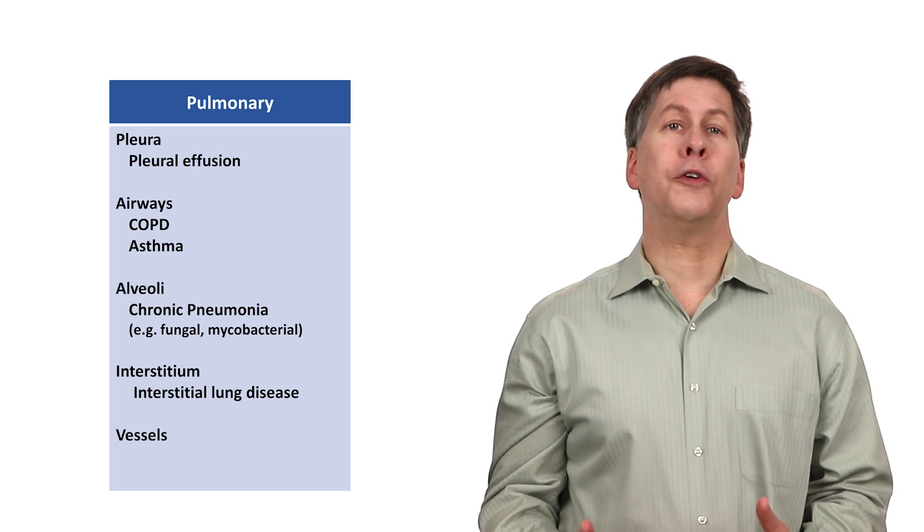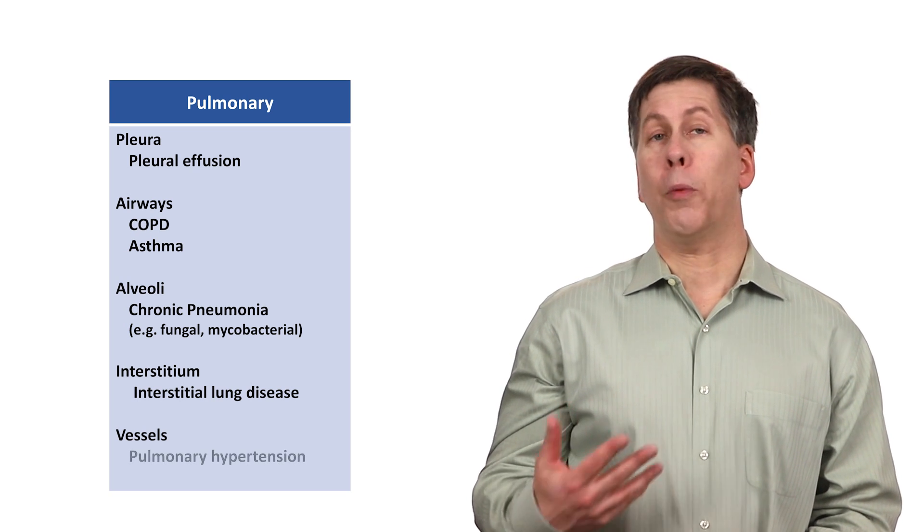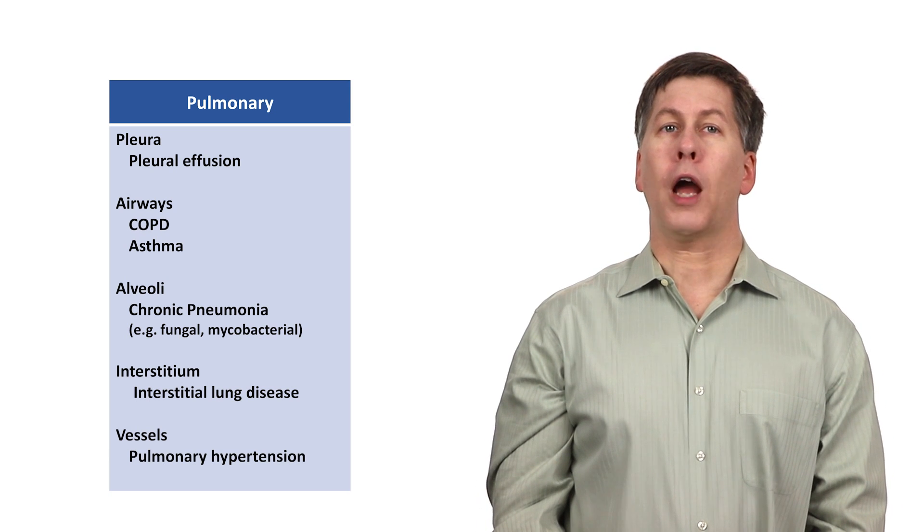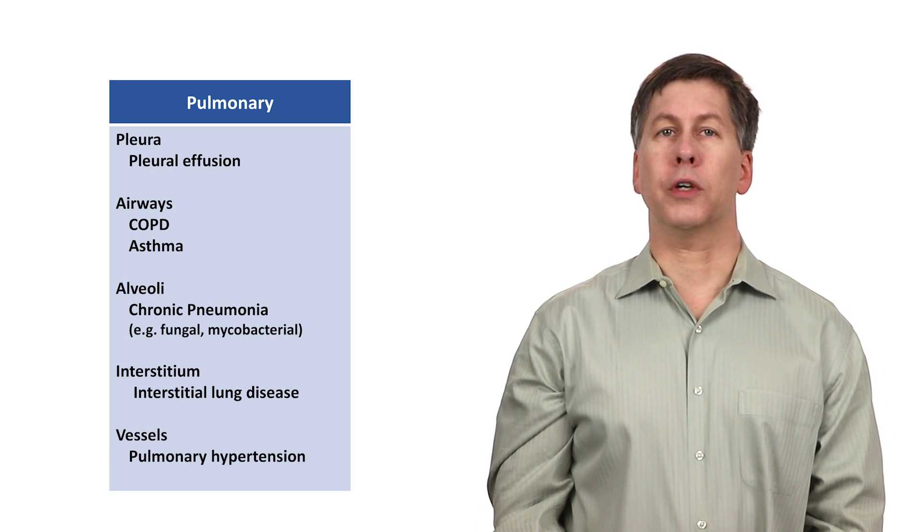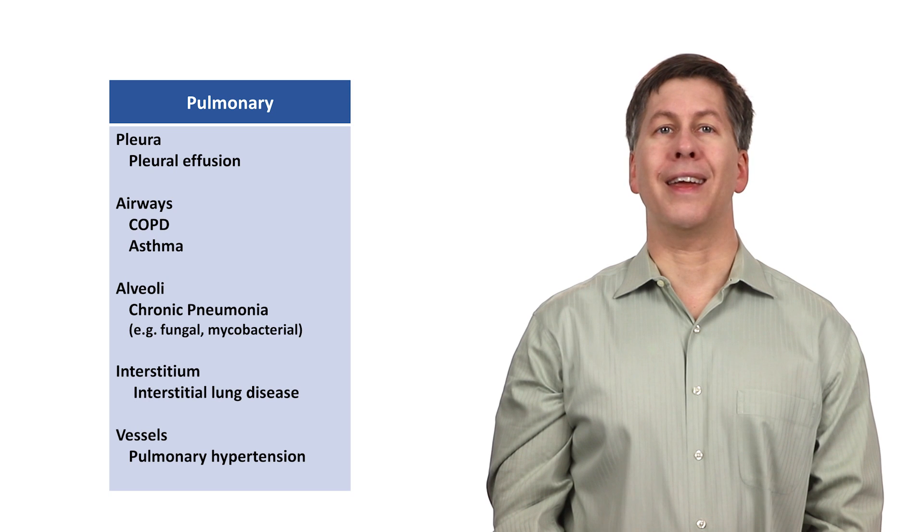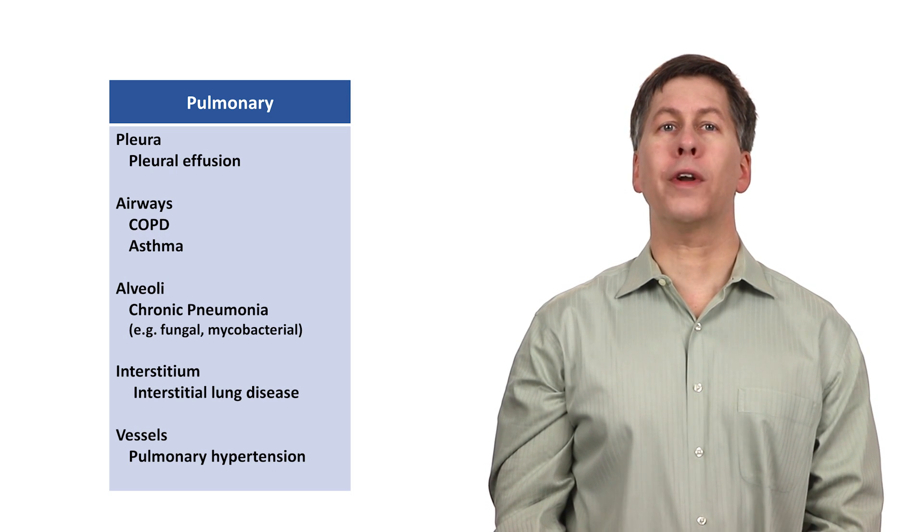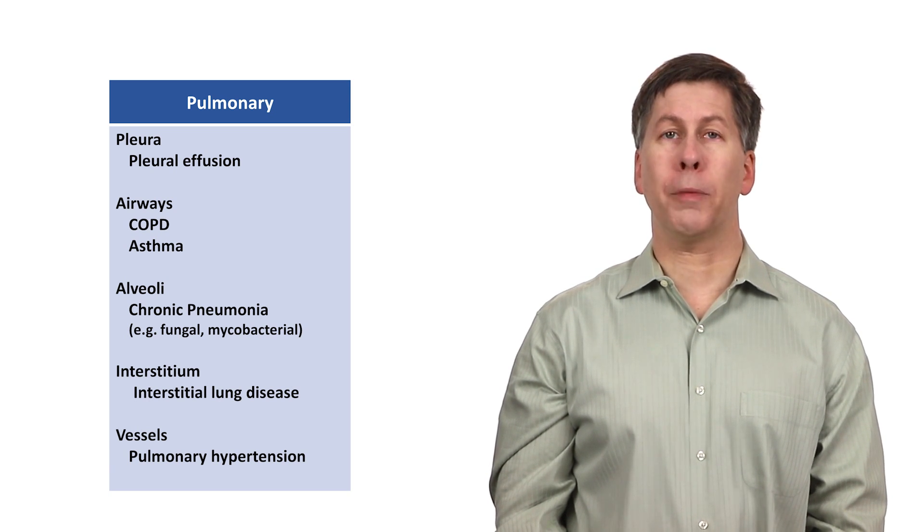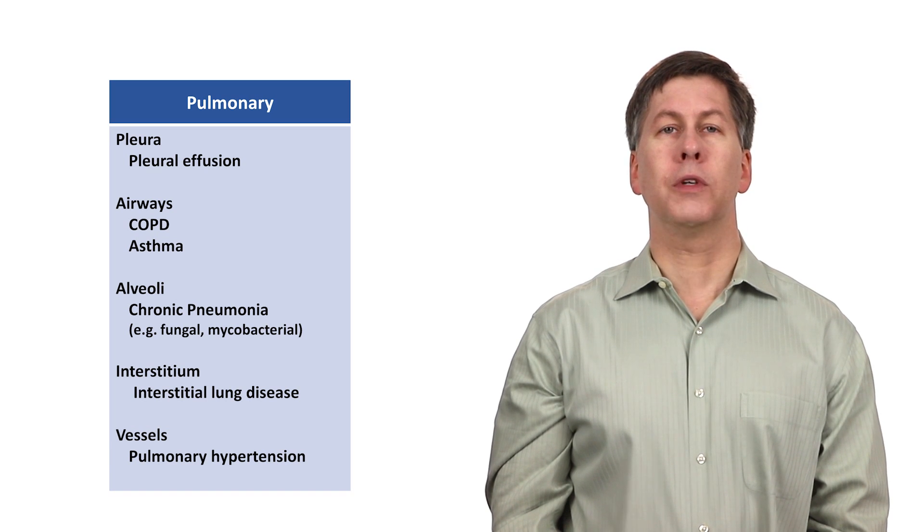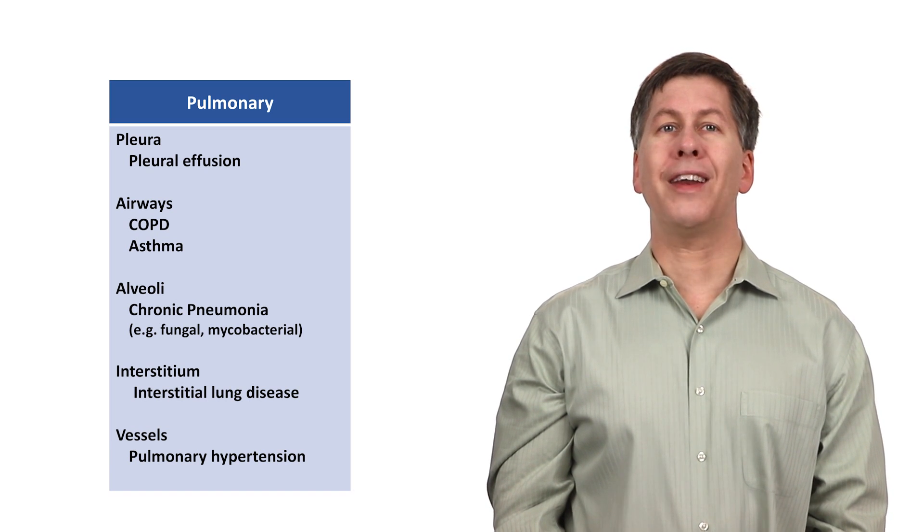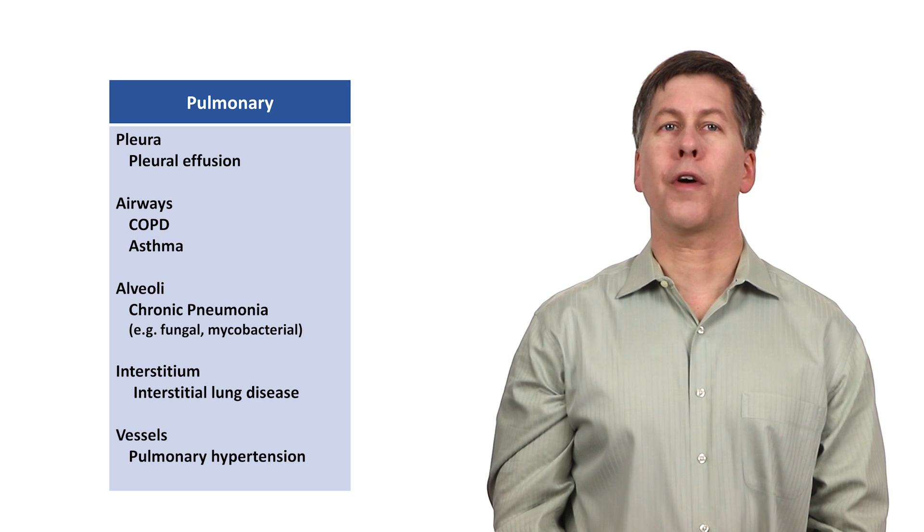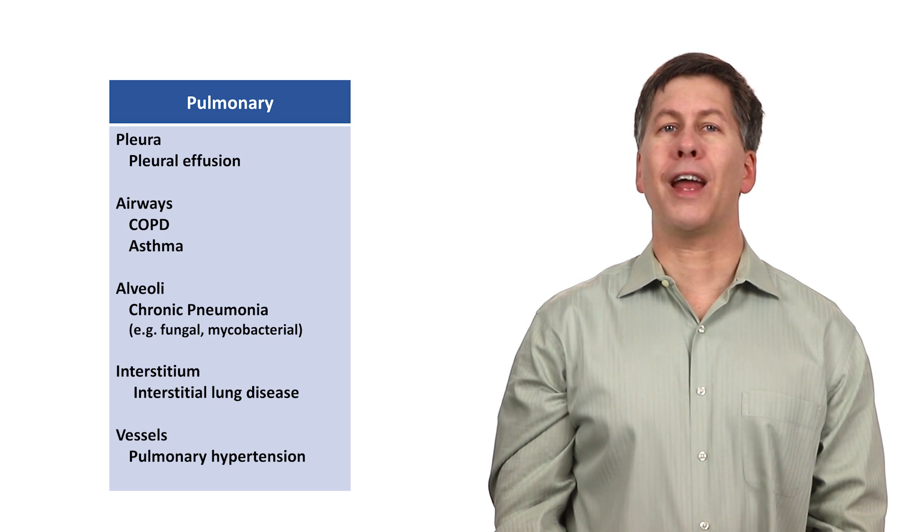And finally, under the pulmonary vessels, there is pulmonary hypertension. Pulmonary hypertension can be a primary disorder seen with both familial and idiopathic forms, or it can be secondary to heart failure, chronic pulmonary emboli, autoimmune disease, sarcoidosis, or any chronic lung disease associated with hypoxemia, including the aforementioned COPD and ILD.